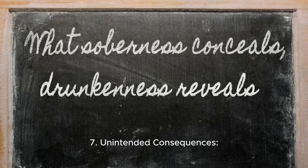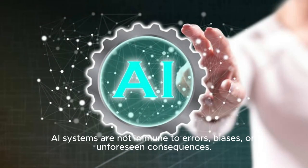Seven: Unintended Consequences. AI systems are not immune to errors, biases, or unforeseen consequences.